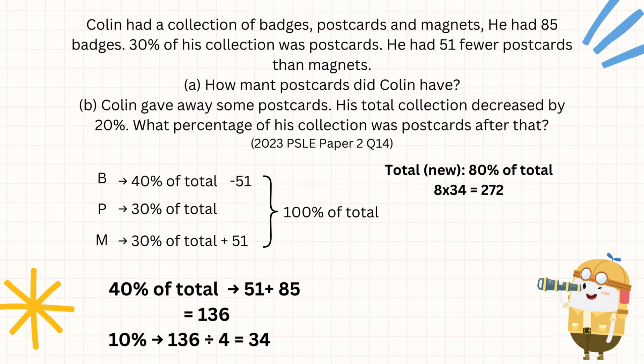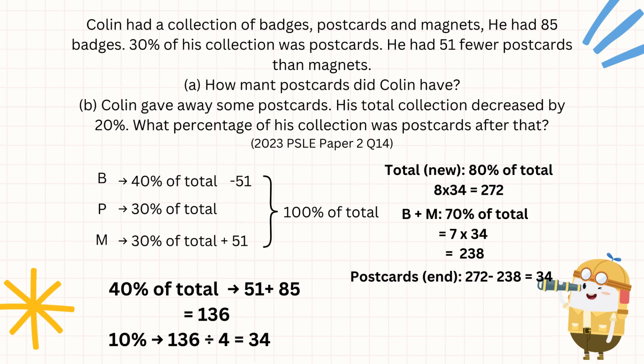We also need to determine the decrease in postcards. One thing that didn't change was the number of badges and magnets. Badges and magnets, if we add up their percentages: 40% plus 30% is 70%, and the minus 51 and plus 51 cancel each other out. This means badges plus magnets gives us 70% of total, which is 7 times 34, giving us 238. So postcards at the end equals 272 minus 238, giving us the value of 34.